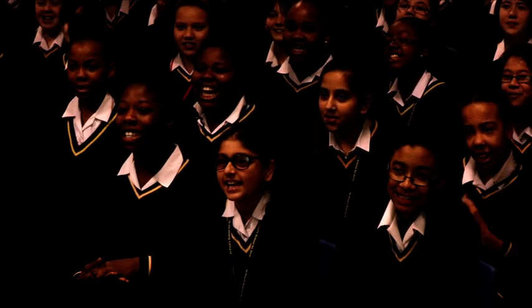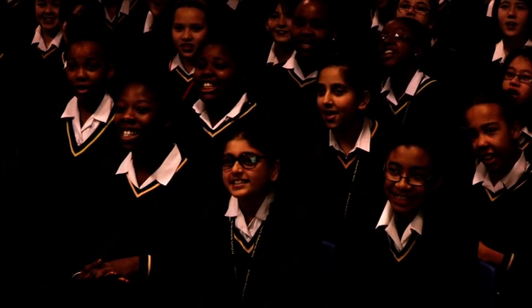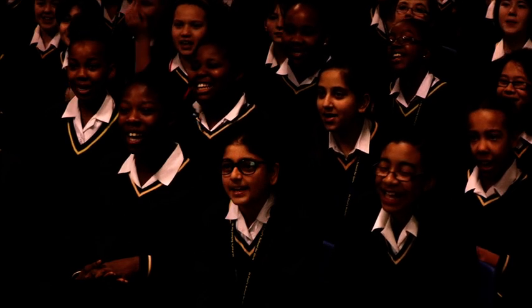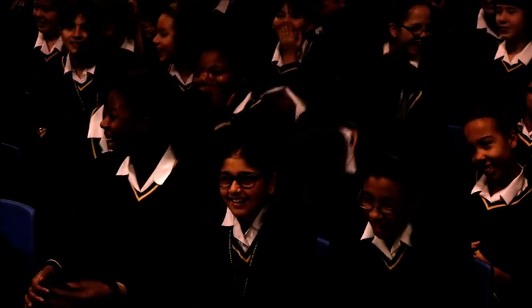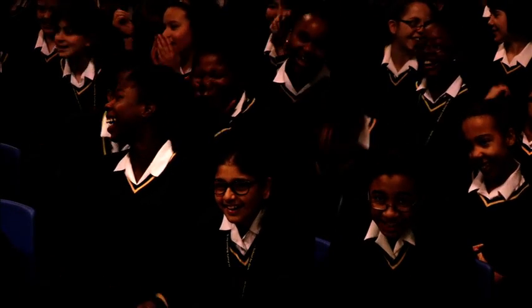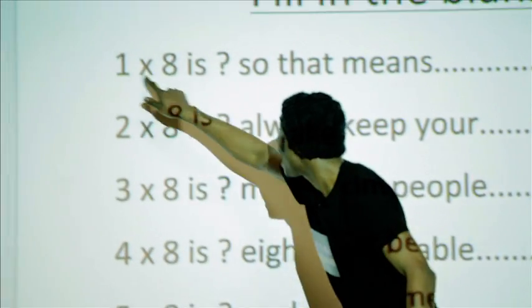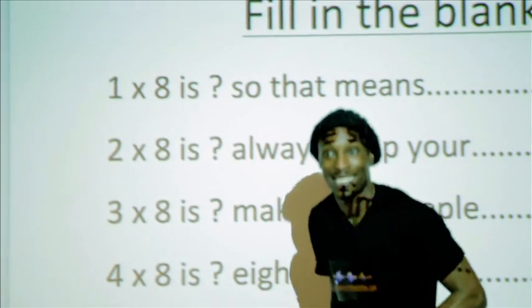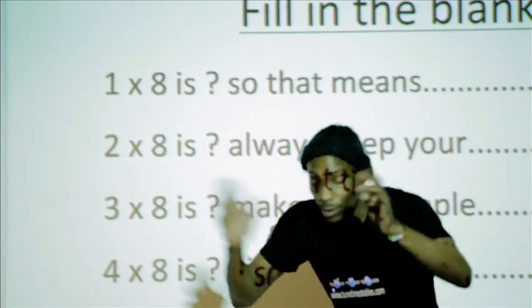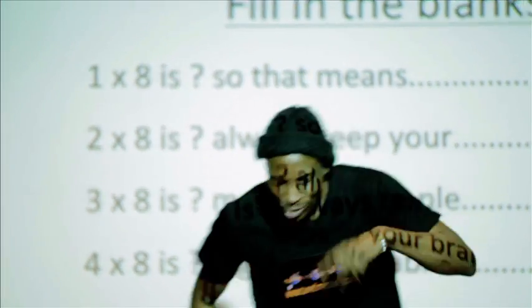One, two, one, two, three. One times seven is seven. Stop, stop, stop. One times seven is seven. One times seven is seven. One times eight is eight. One times eight is eight. Alright, let's try again.